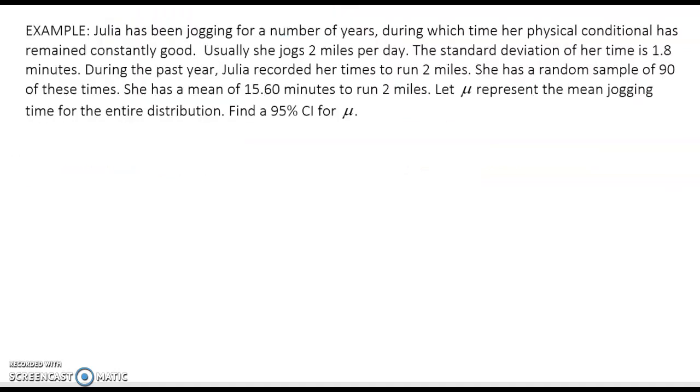This example we'll do by hand and then we'll go back and we'll use our calculator functions to find the answer. So our example says Julia has been jogging for a number of years during which time her physical condition has remained constantly good. Usually she jogs two miles per day. The standard deviation of her time is 1.8 minutes.